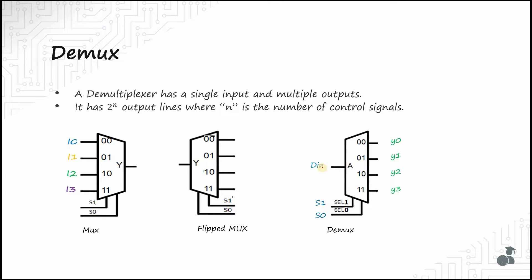Each combination of the select lines specifies to which output line the input data DIN must flow. If the select lines are 00, DIN flows to Y0. If it is 01, DIN is available at Y1. If it is 10, it is available at Y2. And if the select lines are 11, DIN is available at Y3.